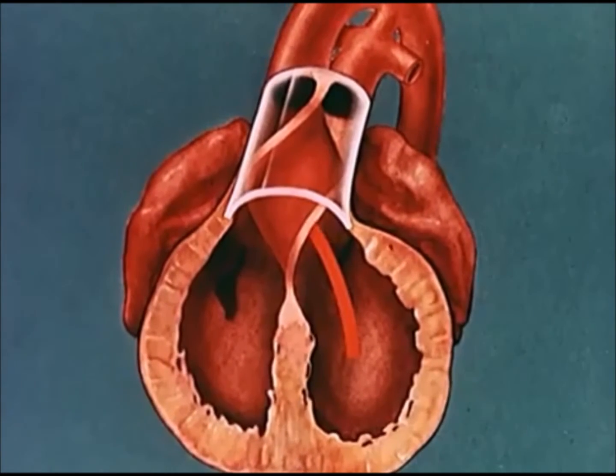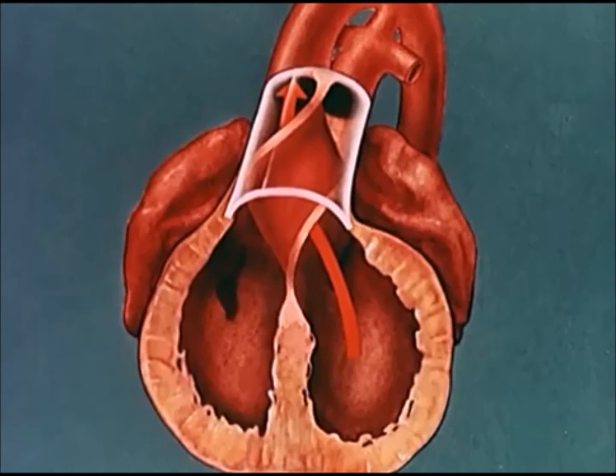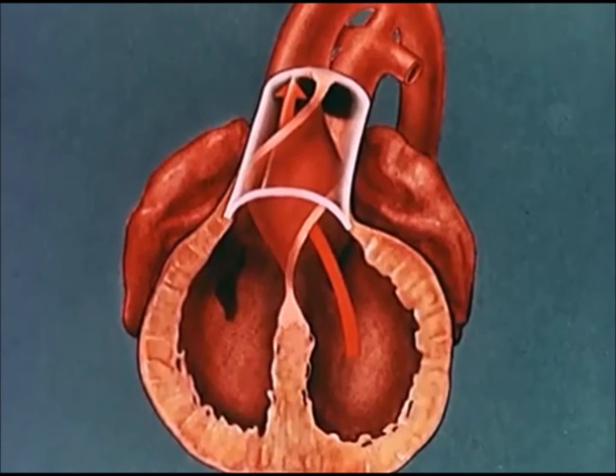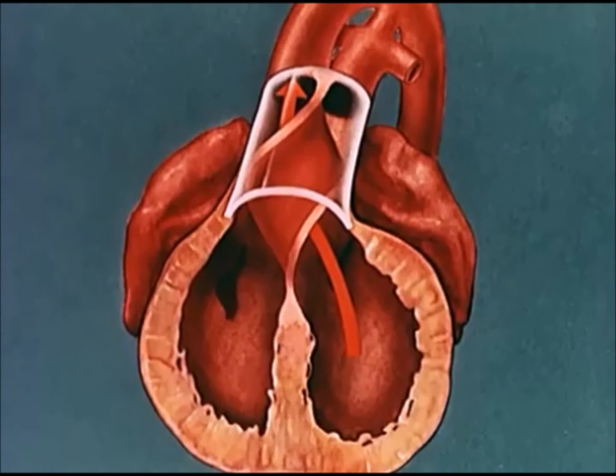Blood from the left ventricle enters the aorta, which passes to the right behind the pulmonary artery.